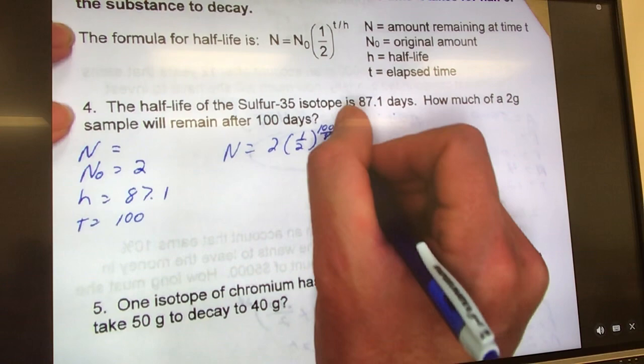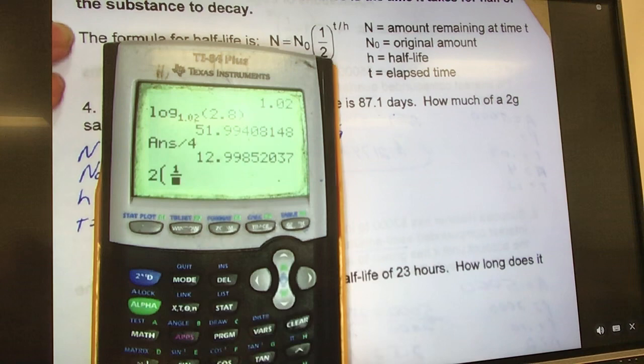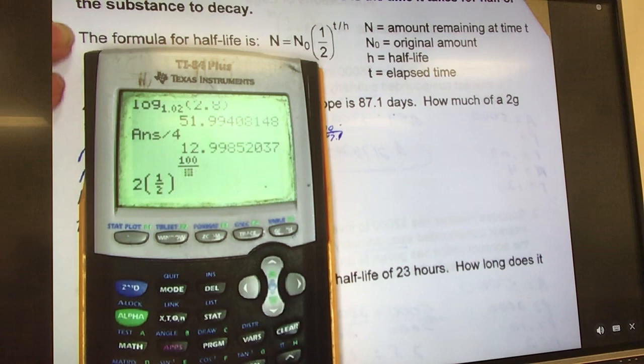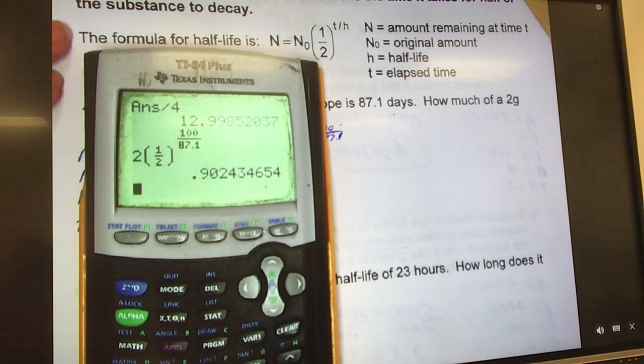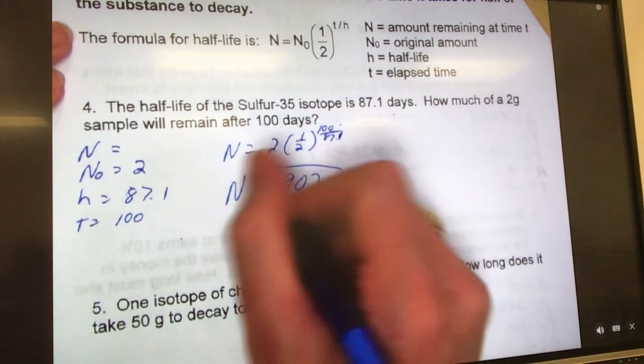All I have to do is plug it straight into my formula and solve it. So N equals 2 times one-half raised to T which is 100 divided by 87.1. So we put that in our calculator: 2, parentheses, one-half, close them, raised to, parentheses or fraction, 100 over 87.1, hit enter and it tells me 0.902. So there would be 0.902 grams left after 100 days.